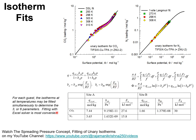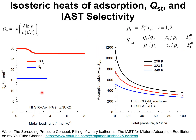From the isotherm fits shown on the previous slide, the isosteric heats of adsorption may be determined analytically. In the simplest case of a single-site Langmuir model, it is easy to derive an analytic expression for QST. Even for a dual-site Langmuir model, you can determine it analytically. For a dual-site Langmuir-Freundlich model, you may need to use Mathematica or Maple to determine an analytic expression for the isosteric heats of adsorption. I've done all that and programmed it into Excel.